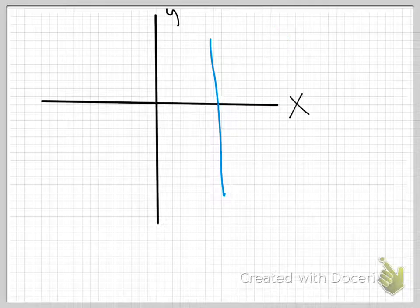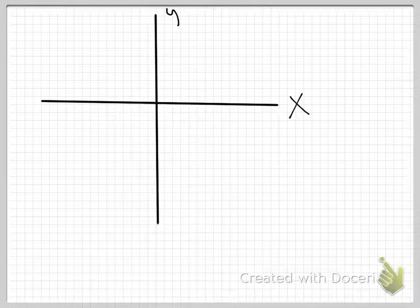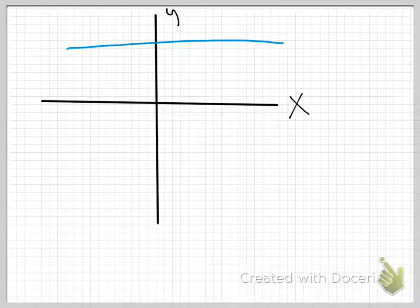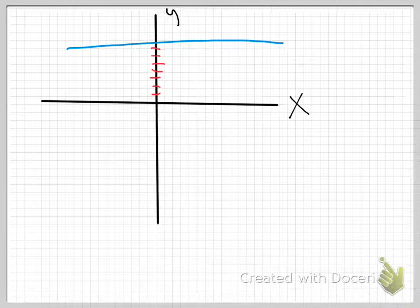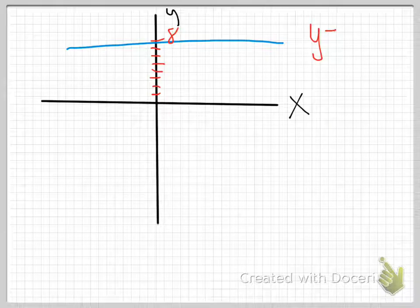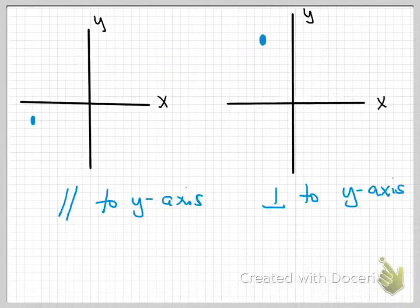Now let's say we get a line like this. This time you can see that it does not touch the x-axis. If it's not touching the x-axis, then we will not have an x in our equation. Let's say it's at eight — so it's touching the y-axis at eight. We'd say y equals eight. And that's how we're going to do these problems.